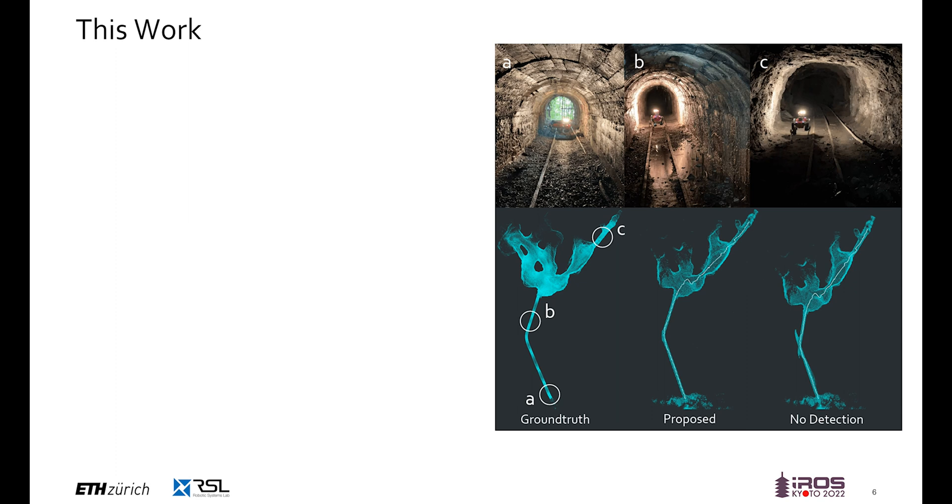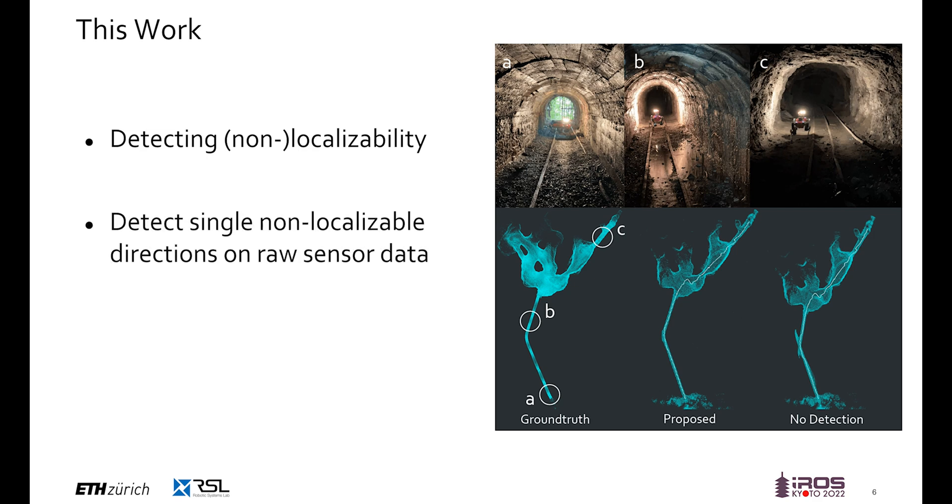This work proposes a solution for the detection of missing localizability in different scenarios. In contrast to most prior work, we detect single non-localizable directions on the raw sensory data without running expensive registration optimization online. In the image on the right, for example, only point B is non-localizable. During the whole process, we avoid any online parameter tuning or modifications.